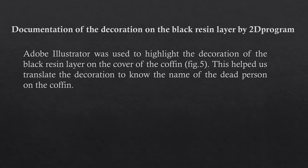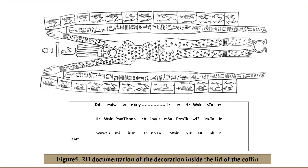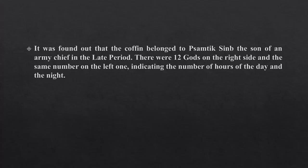Documentation of the decoration on the black resin layer by 2D program. Adobe Illustrator was used to highlight the decoration of the black resin layer on the cover of the coffin. This helped to translate the decoration and identify the name of the deceased person on the coffin. Figure 5 shows the 2D documentation of the decoration inside the lid of the coffin. It was found that the coffin belonged to Basmatik Sinib, the son of an army chief in the late period. There were 12 gods on the right side and the same number on the left, indicating the hours of the day and the night.